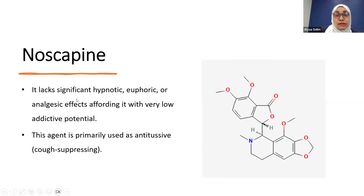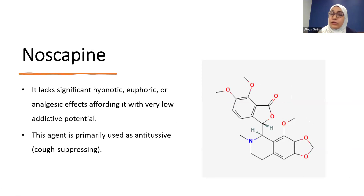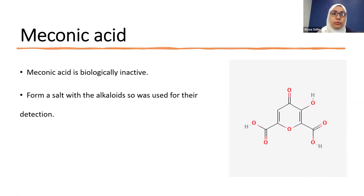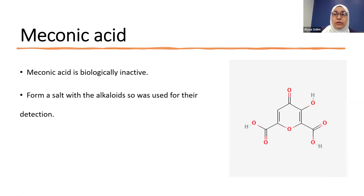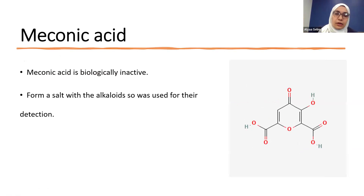Noscapine lacks significant hypnotic, euphoric, and analgesic effects, and does not have addictive potential. It can be used as an antitussive or cough-suppressing drug. Finally, meconic acid is biologically inactive but is found in opium forming salts with these alkaloids, and was historically used to identify them.